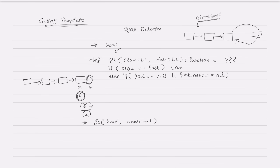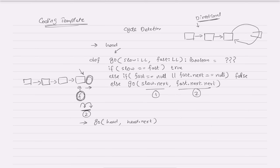Since fast makes a hop of two, we check both fast and fast.next for null — if either is null we return false, meaning no cycle was found. In the else branch, we recursively call the function with slow moving to slow.next and fast moving to fast.next.next, making a hop of two. This template can be adjusted as an intermediate step or final solution depending on the question.